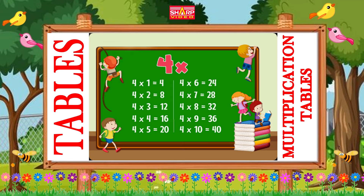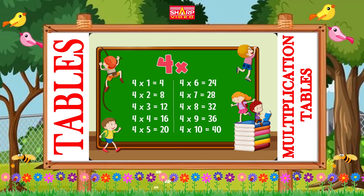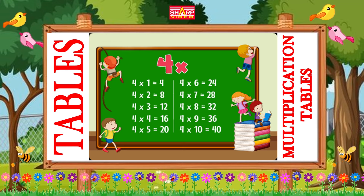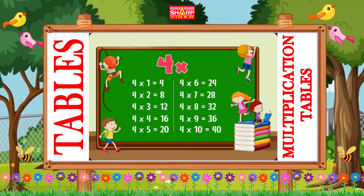four ones are four, four twos are eight, four threes are twelve, four fours are sixteen.